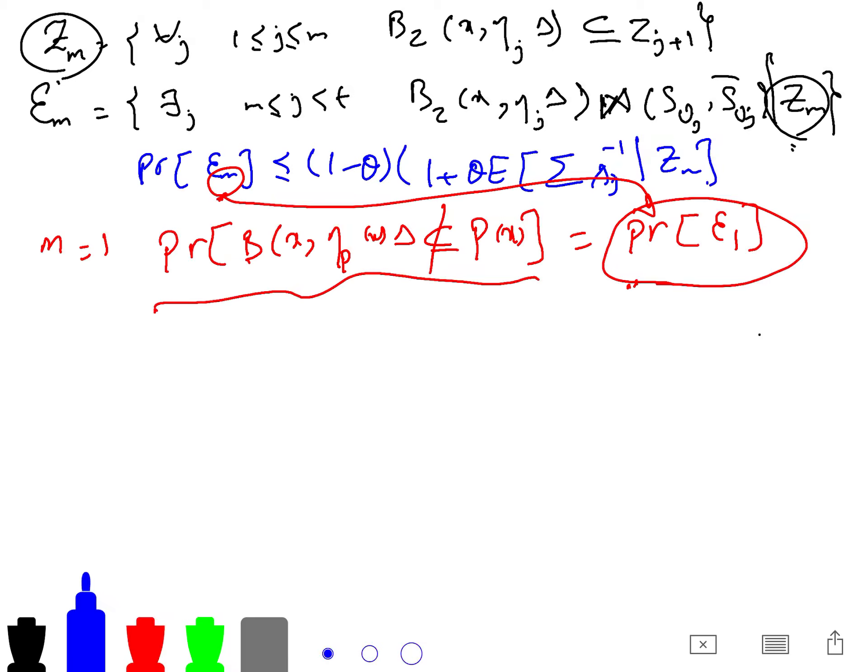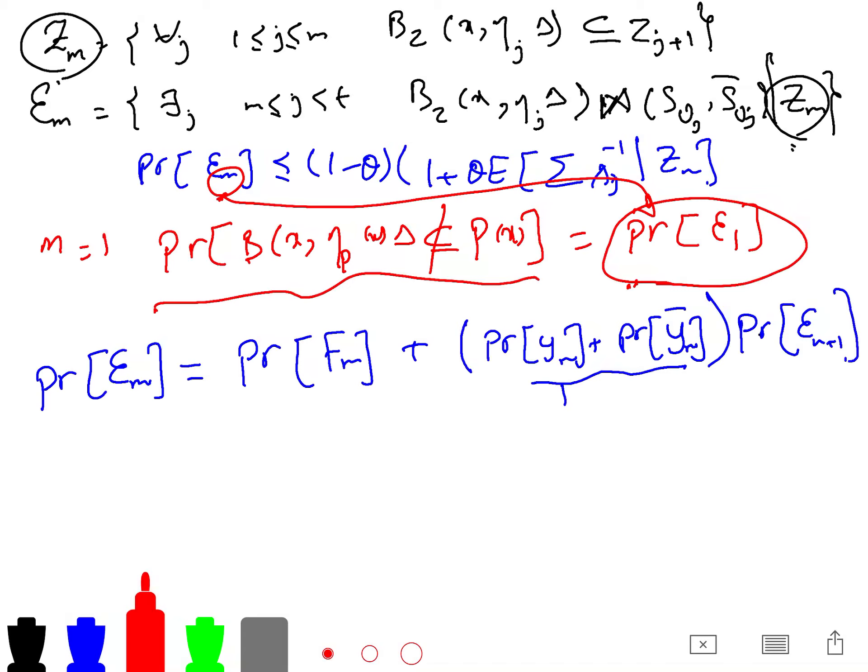The probability of event KC_M can be written as equal to probability of F_M plus probability of G_M plus probability of not G_M. Since this equals 1, multiplying by probability of KC_{M+1} doesn't change it. Making this an inequality, this is less than or equal to probability of F_M. Removing one term and reducing from 1, this becomes less than probability of G_M times probability of KC_{M+1}.